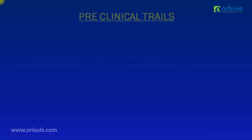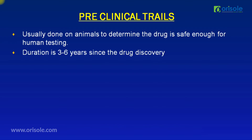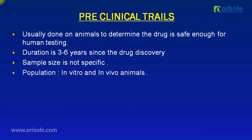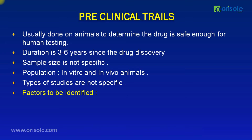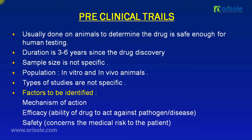Let us see the preclinical trials. Preclinical trials are usually done on animals to determine if the drug is safe enough for human testing. The duration is about 3 to 6 years since drug discovery. The sample size is not specific, and the population includes in vitro and in vivo animals. The types of studies are also not specific. Factors identified include the mechanism of action, efficacy — the ability of the drug to act against the pathogen or disease — and safety, which concerns the medical risk to the patient.